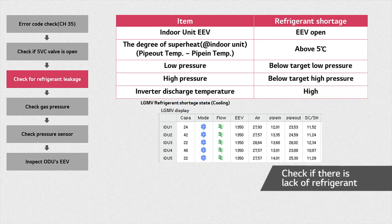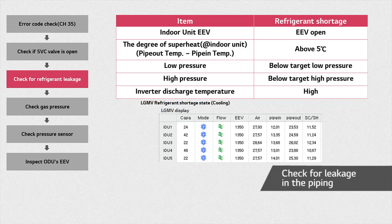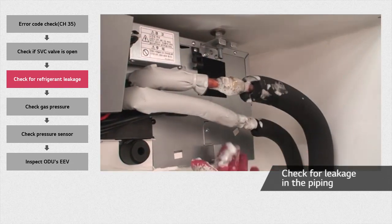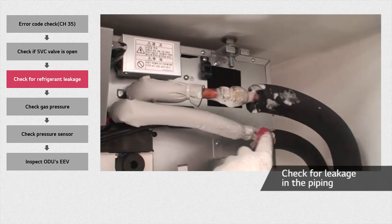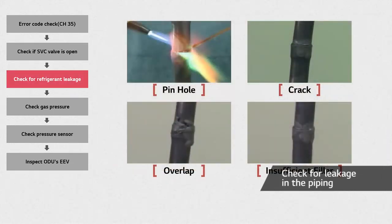Low refrigerant volume may cause excessive discharge temperature. There are two possible causes for lack of refrigerant: maybe the right amount was not charged into the system from the very beginning, or there is a leakage in the piping. Check the brazing and flare connections of the air conditioner. To make sure there are no refrigerant leaks, check for bubbles. Also, check that the piping is not deformed.